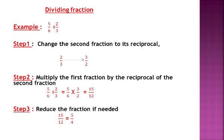Step 2 is to multiply the first fraction by the reciprocal of the second fraction. When we get the reciprocal, the operation changes from division to multiplication. So 5 over 6 divided by 2 over 3 becomes 5 over 6 multiplied by 3 over 2. Multiply the numerators together and the denominators together: 5 times 3 is 15, and 6 times 2 is 12, giving us 15 over 12.